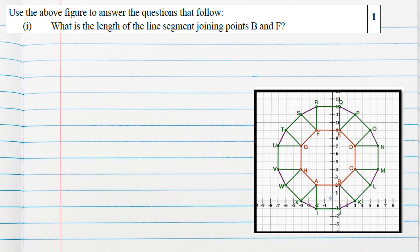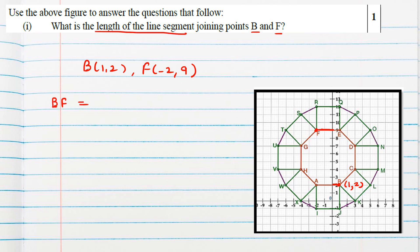Question one is: what is the length of the line segment joining point B and F? We need to know the coordinates of B and F. B is the point where x coordinate is 1 and y coordinate is 2, so B is (1, 2). F is the point with x coordinate minus 2 and y coordinate 9. We find the length BF using the distance formula.